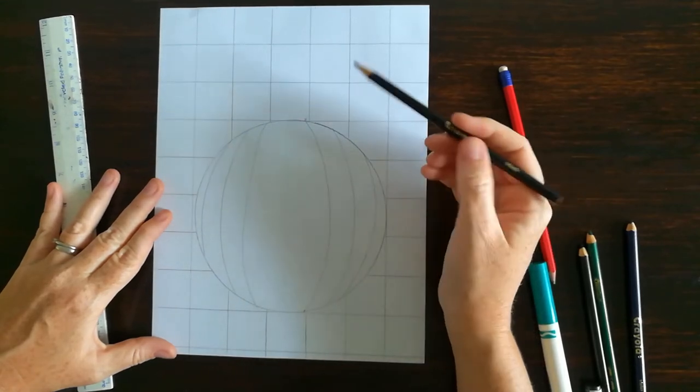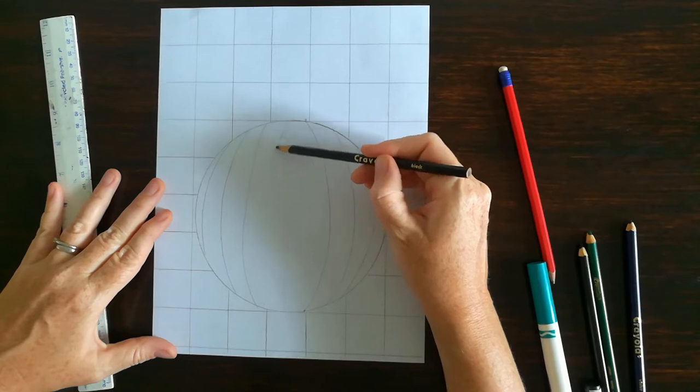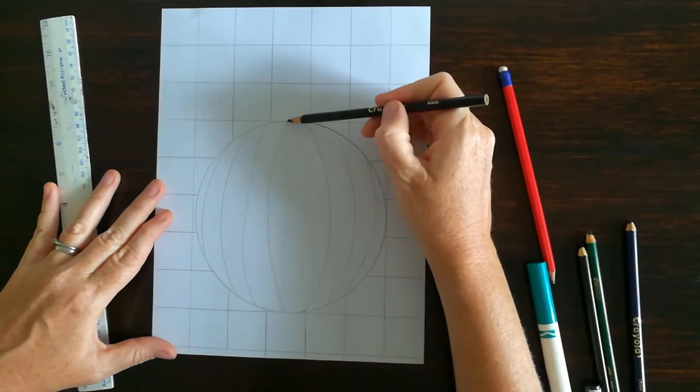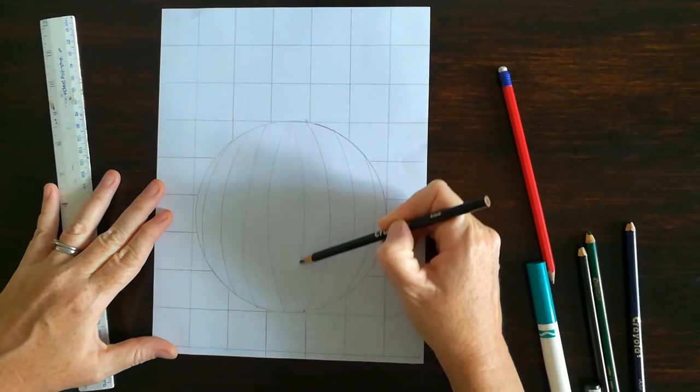Alright, now I've got this big empty space in the middle, so I'm going to actually make two that are a little bit closer here in the middle. Like that.